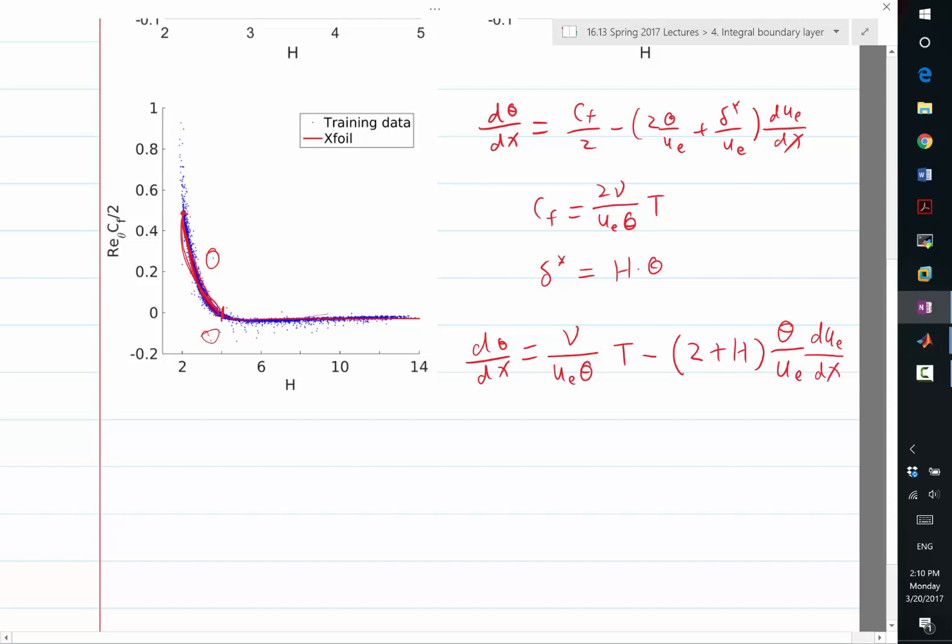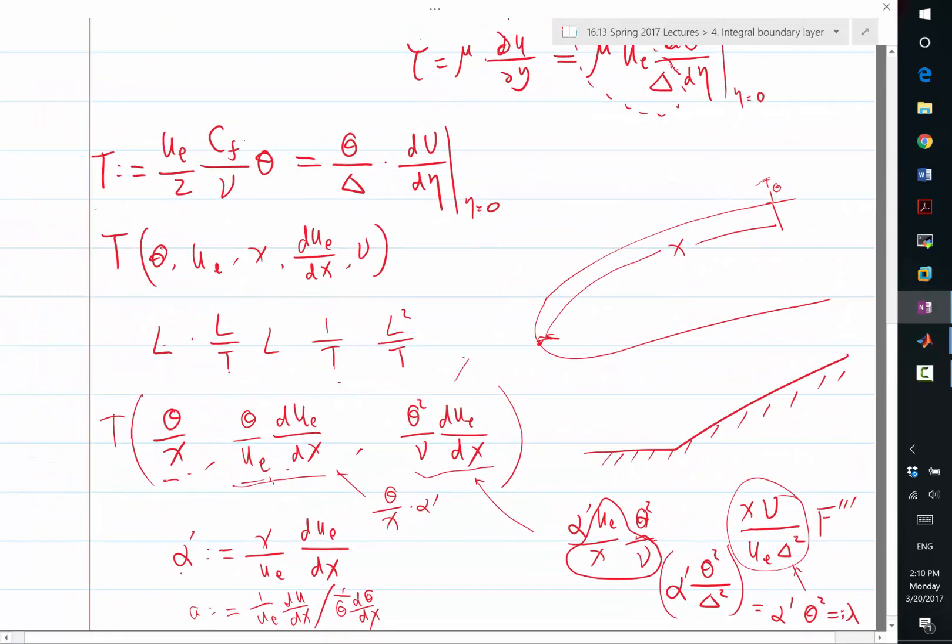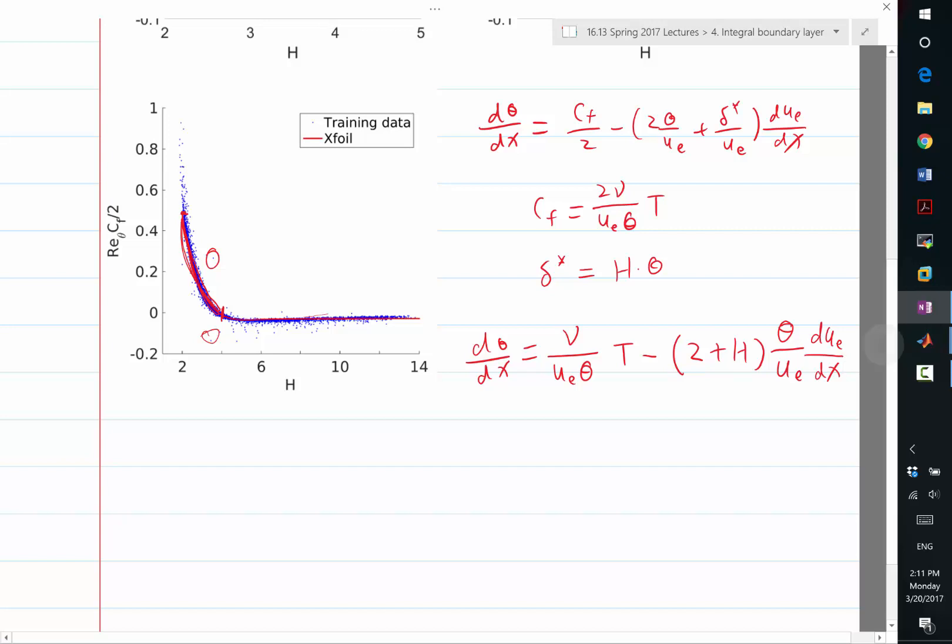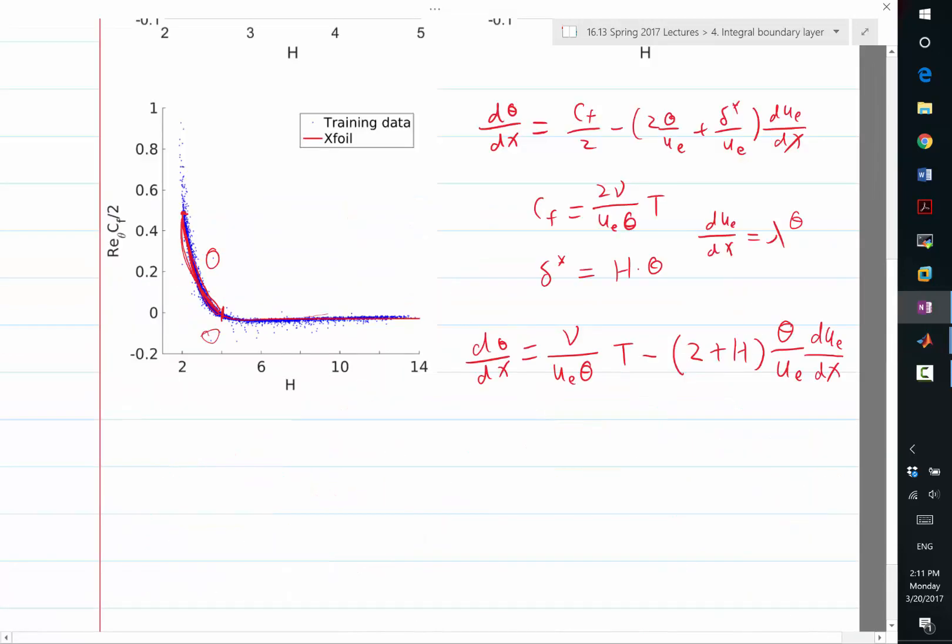Now, ue has to be here, and theta has to be here, right, and I have d ue dx. Okay. Oh, and also, I want to remember, how do I transform d ue dx, because I have my definition of lambda. So, this is lambda. d ue dx is equal to lambda times nu divided by theta squared, right?